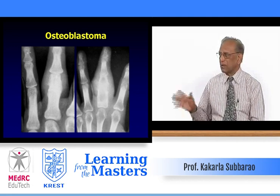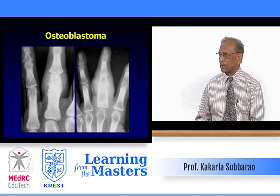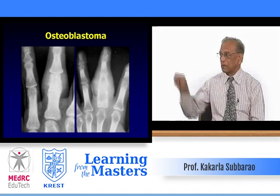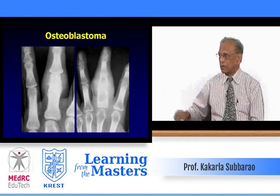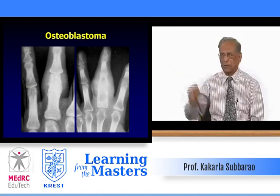Two children — one with idiopathic coxa vara with metaphyseal defects, and another almost similar case except this child has many other lesions. The second case represents metaphyseal dysplasia or dysostosis.